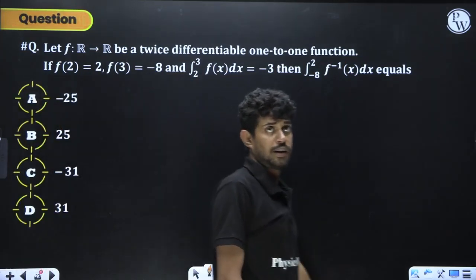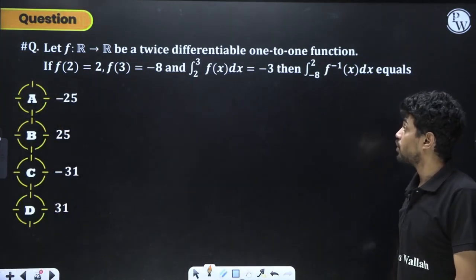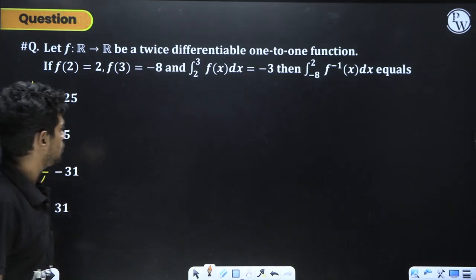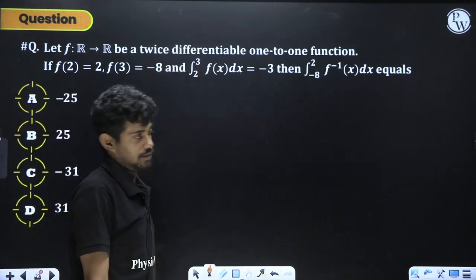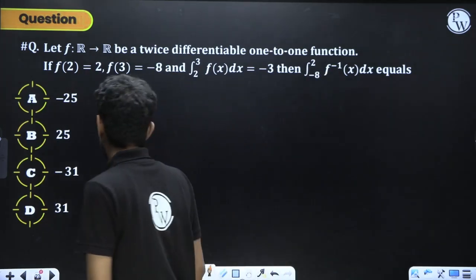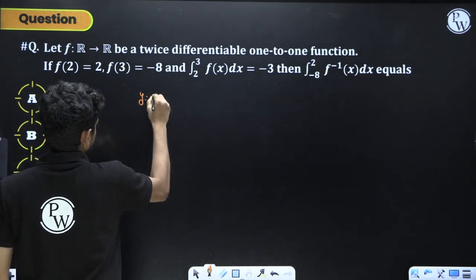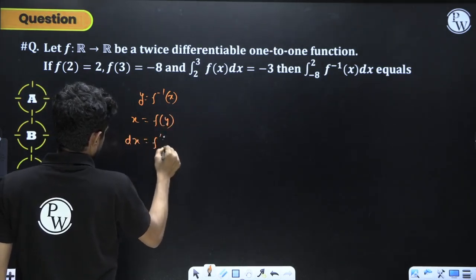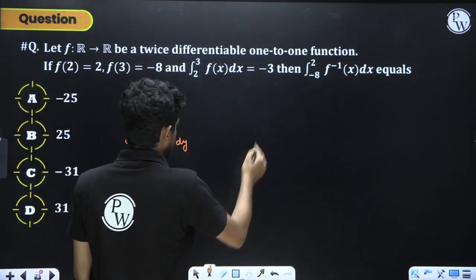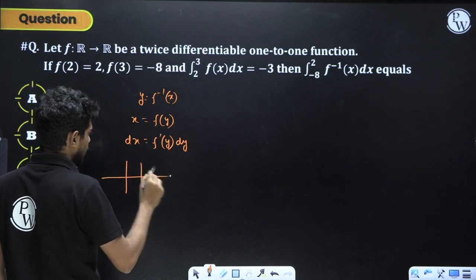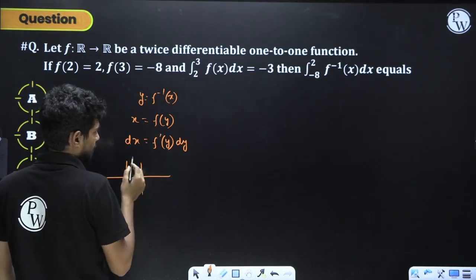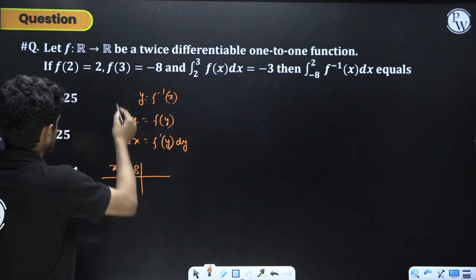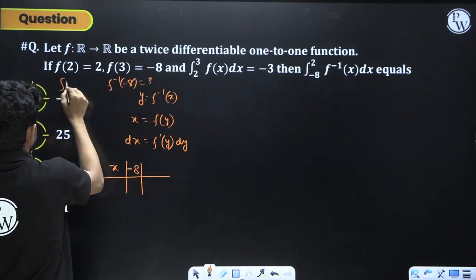Next: f: ℝ → ℝ is twice differentiable and one-to-one, with f(2) = 2, f(3) = -8, and ∫(2 to 3) f(x)dx = -3. Find ∫(-8 to 2) f⁻¹(x)dx. Let y = f⁻¹(x), so x = f(y) and dx = f'(y)dy. Changing limits: when x = -8, y = 3; when x = 2, y = 2.